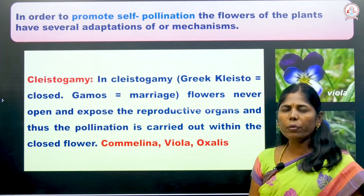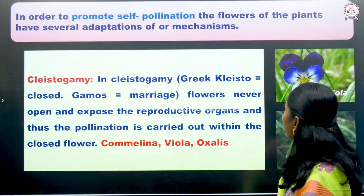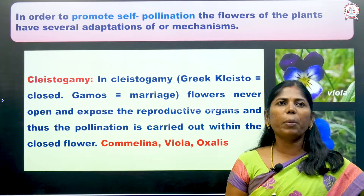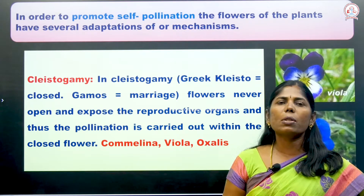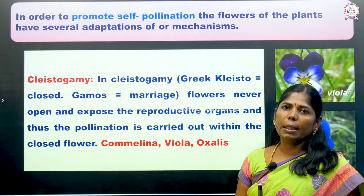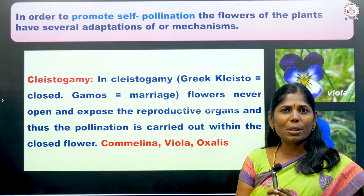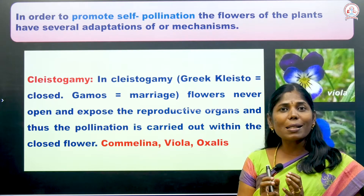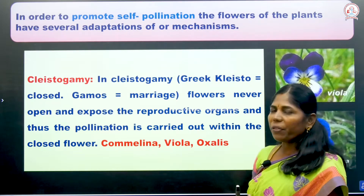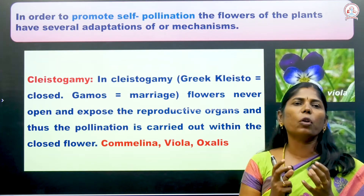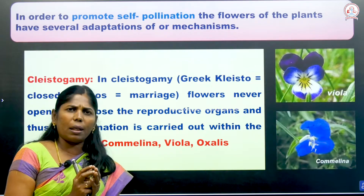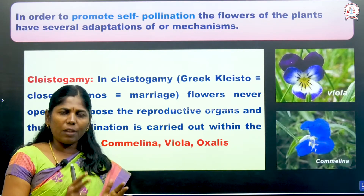In order to promote self-pollination, flowers of plants have several adaptations. The first is cleistogamy — I already explained: the male and female sex organs are very close to each other and closed by non-essential floral parts, so self-pollination occurs. Cross pollination is not possible. Examples are Commelina, Viola, and Oxalis.